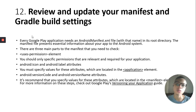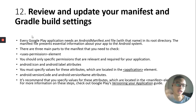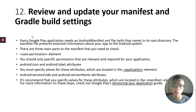Review and update your manifest and Gradle build settings. Every Google Play application needs an Android manifest. When you first create your project it's automatically added, but before uploading to the Play Store you must review it for errors. There are three parts to check: the uses-permission element — only specify permissions relevant and required, such as camera or location permissions; the Android icon and Android label attributes located in the application element; and the Android version code and Android version name attributes in the manifest element.